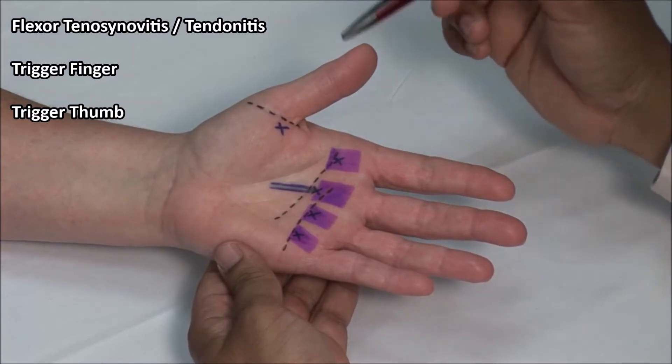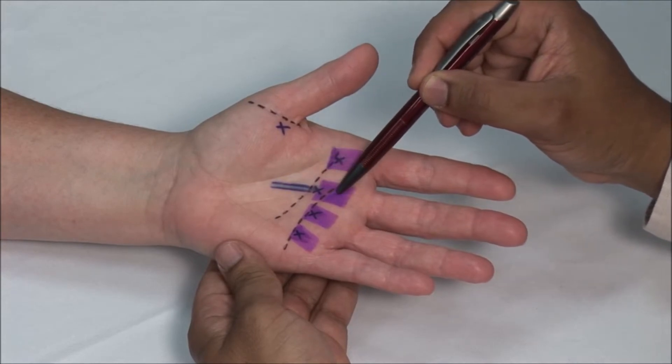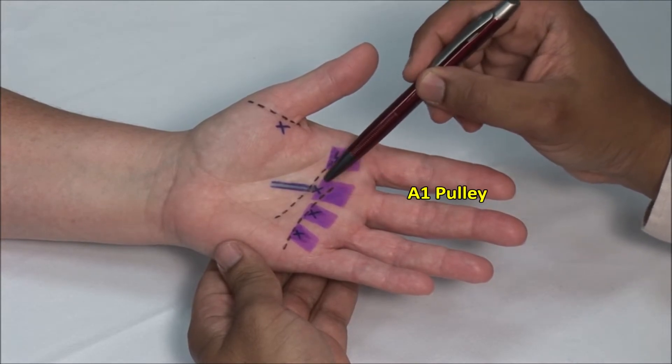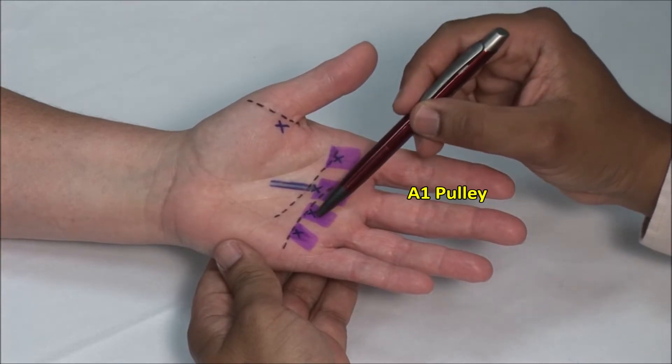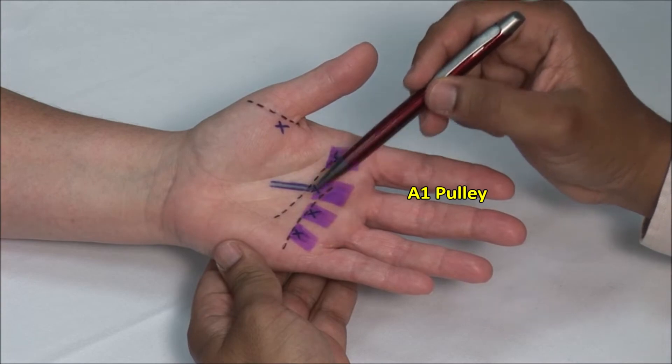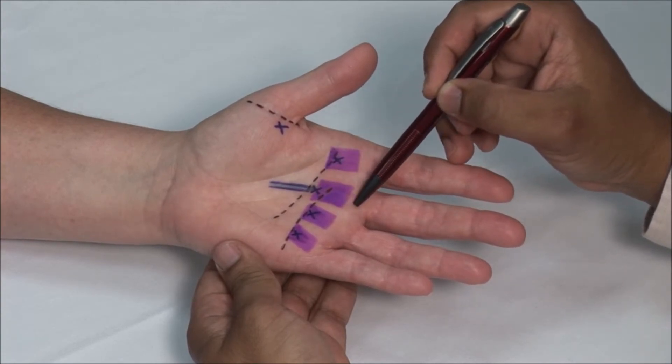The tendon is usually tender along its distal portion and under the A1 pulley. The A1 pulley, indicated here in purple, is a fibrous band overlying the metacarpal heads. The flexor tendon passes under this band and so bowstringing is avoided when the finger is flexed.